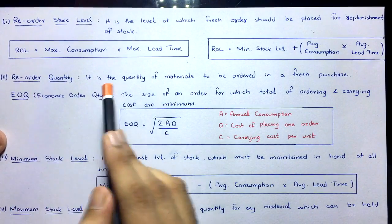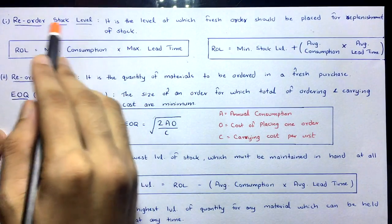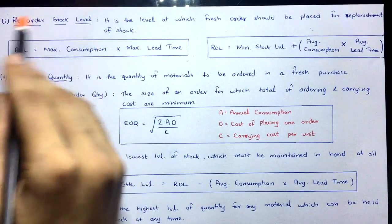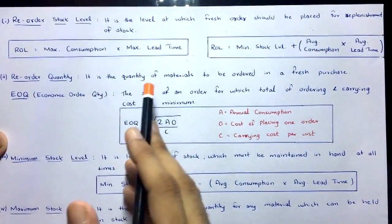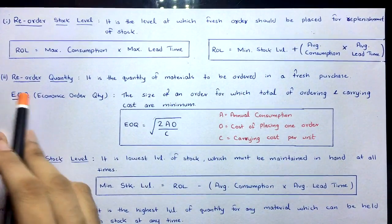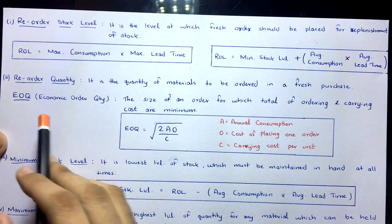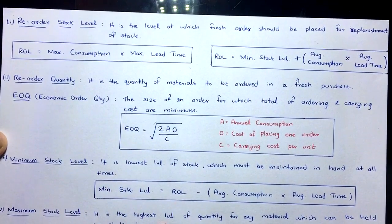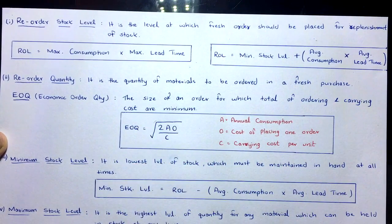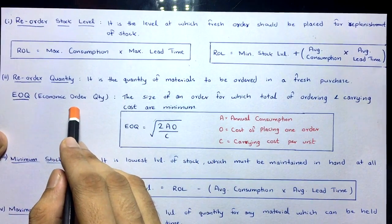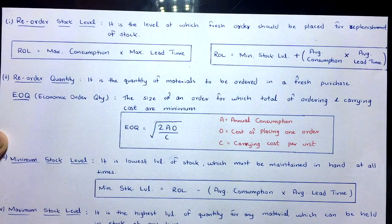Reorder quantity is the quantity of materials to be ordered in a fresh purchase — how much to order. EOQ (economic order quantity) is the most economical quantity to order: the order size at which the total of ordering cost and carrying cost is minimum. The EOQ formula is: √(2AO ÷ C), where A = annual consumption, O = cost of placing one order, and C = carrying cost per unit.